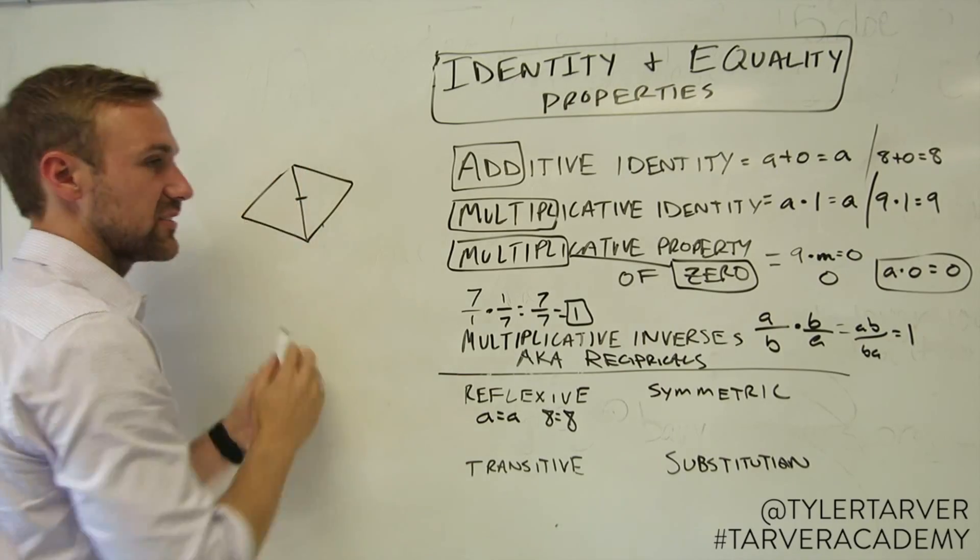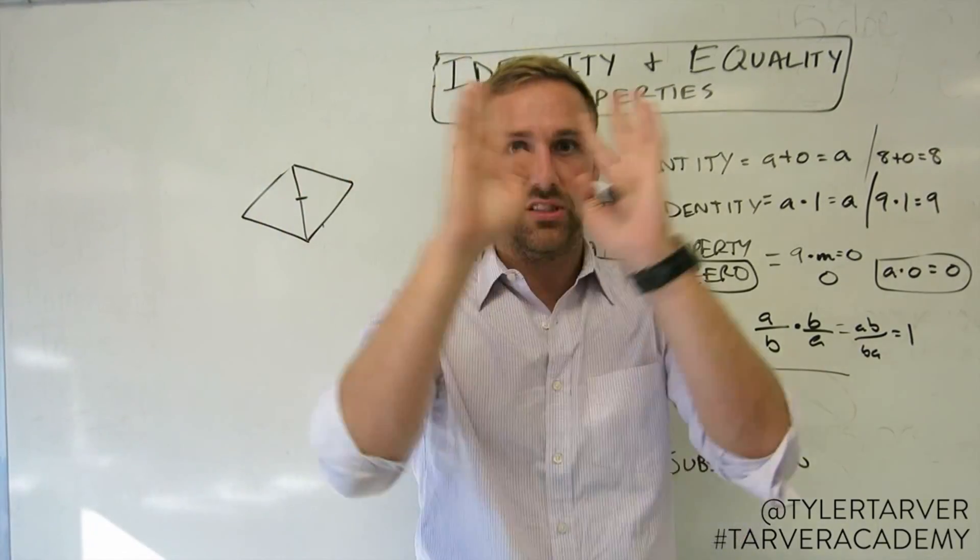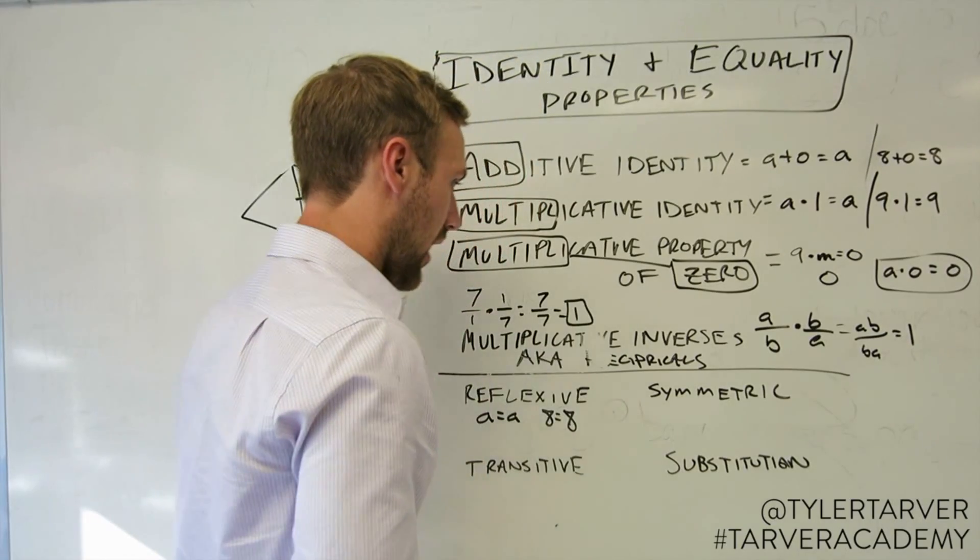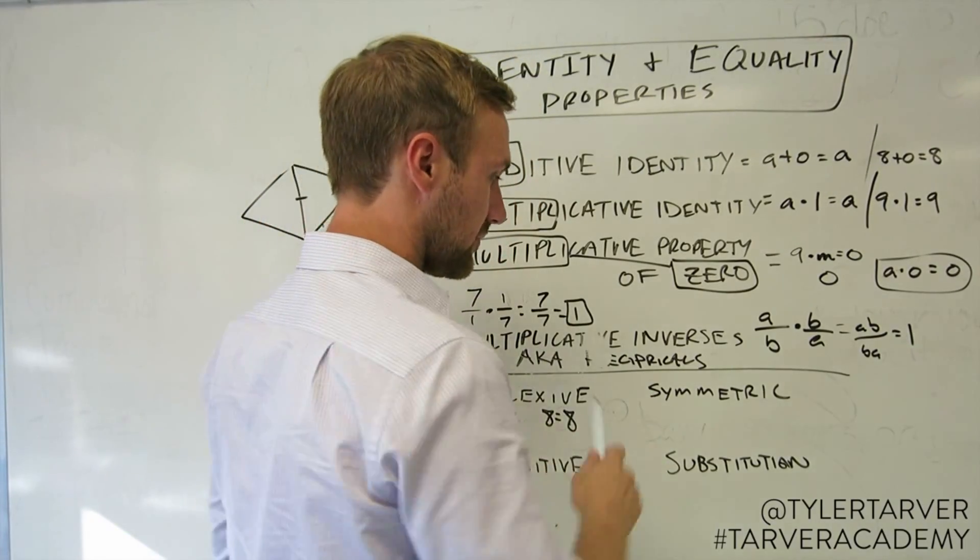This side, if you flipped it over, it hit the same side. People are generally symmetric, unless they have blemishes. All right, so you got the symmetric property.